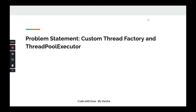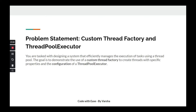The problem statement is: we have been tasked to design a system to efficiently manage the execution of tasks using a thread pool. Using the thread pool, we have to demonstrate the use of a custom thread factory to create threads with specific properties and configure a thread pool executor. The code needs to showcase the implementation of a custom thread factory, and we will use the thread pool executor to manage threads — the custom thread factory controls thread creation with specific properties.